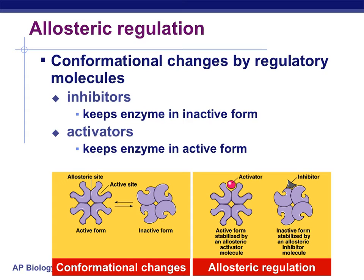Allosteric regulation is going to change the shape of the enzyme. This conformational change can be caused in two ways: inhibitors bind at an allosteric site and cause the enzyme to become inactive — stabilized in an inactive manner. The activator, on the other hand, keeps the enzyme in the active form by keeping those active sites open.